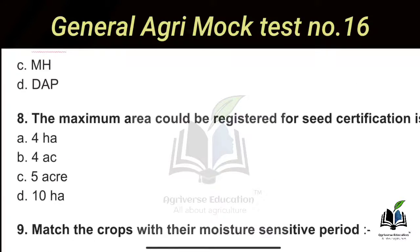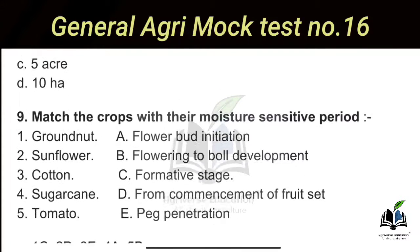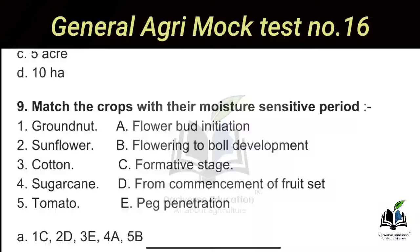The eighth question: The maximum area that could be registered for seed certification is how much? The right answer is Option D — 10 hectares. So the maximum area that can be registered for seed certification is 10 hectares.